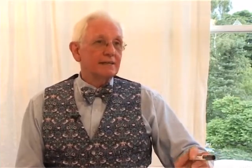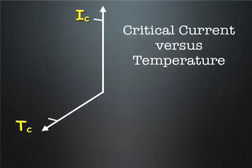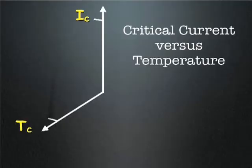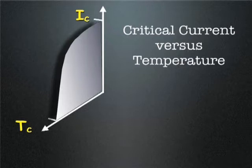In the course of doing this, he discovered that in addition to superconductivity only occurring below a certain critical temperature, once you were below that critical temperature, the superconductor could be driven normal if you exceeded a certain critical current.